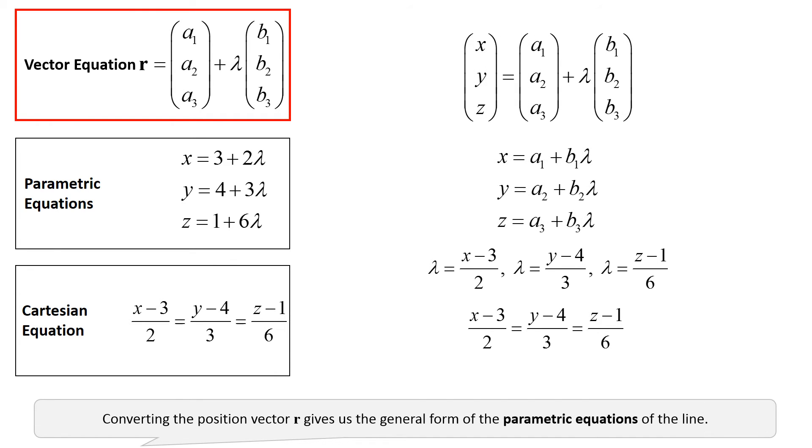Converting the position vector r gives us the general form of the parametric equations of the line.